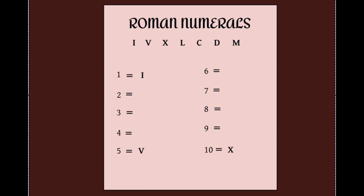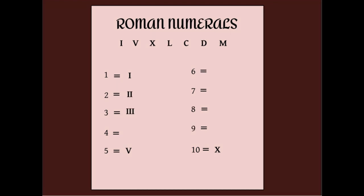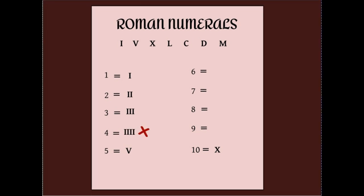So, for two, simple, add an I to indicate another addition of one. For three, add another I to indicate another addition of one. Now, for four, add another. Hold on. Rule number two. You cannot repeat a symbol consecutively more than three times. So, we don't do that.